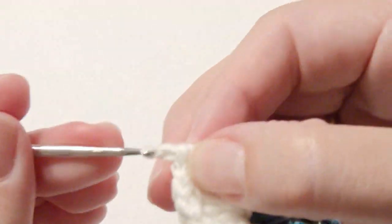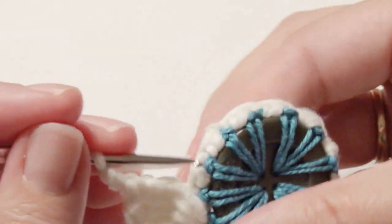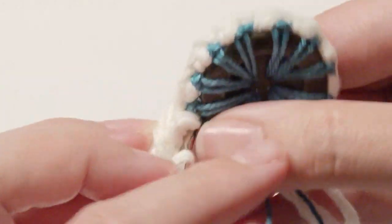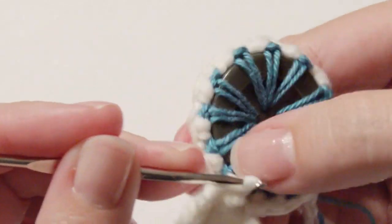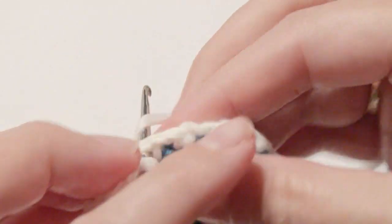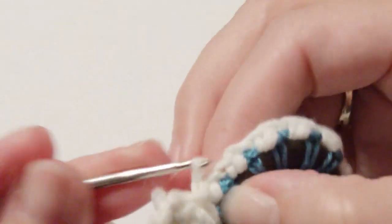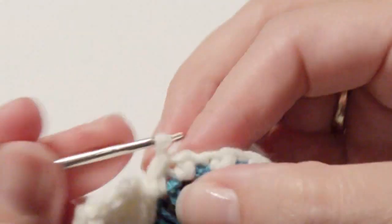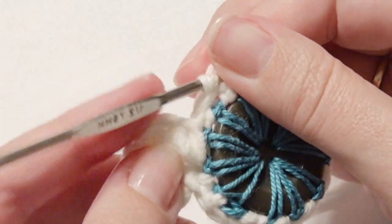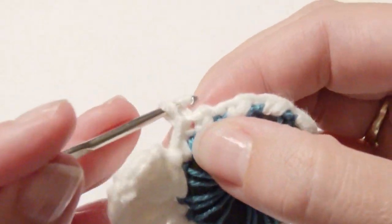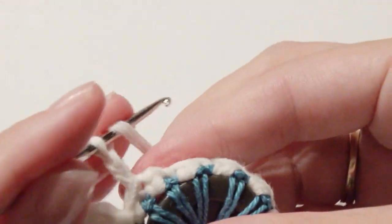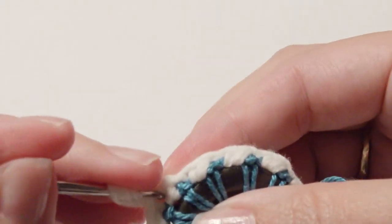I'm going to chain two and slip stitch in the same stitches as the treble crochet and one petal now is complete. Going to slip stitch into the next stitch and then slip stitch into the next stitch and create the petal the same exact way as the first petal. Going to chain two and then work six treble crochet just like the previous petal.